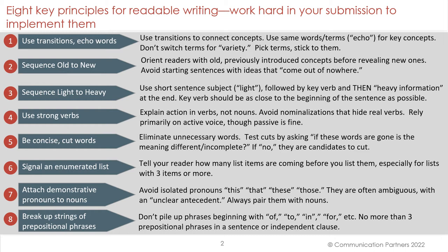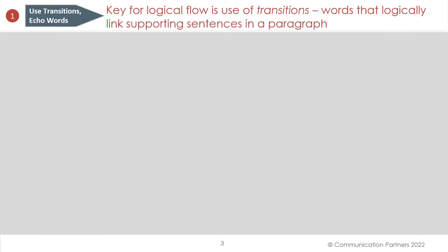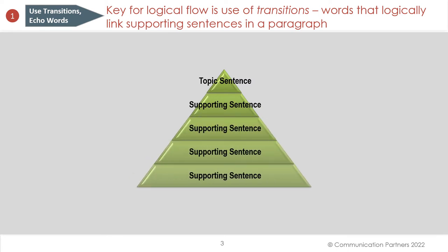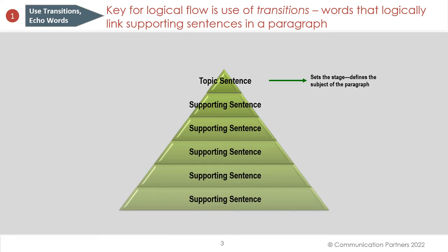Let's take a look at these principles in turn. The key for logical flow is the use of good transitions — words that logically link supporting sentences in a paragraph. You have a topic sentence at the beginning of the paragraph followed by supporting sentences. The topic sentence sets the stage and defines the subject of the paragraph. Logical flow is created by transition words that link one sentence to the next.